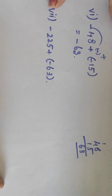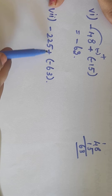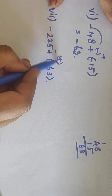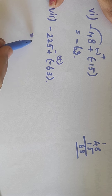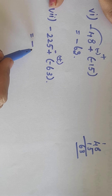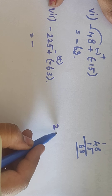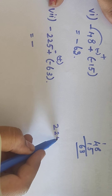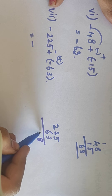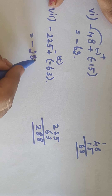Next seventh one: (-225) plus (-63). Minus into plus minus, minus into minus plus; comparing, 225 is the biggest number, write minus symbol. Now add 225 plus 63: that is 288. So the answer is minus 288.